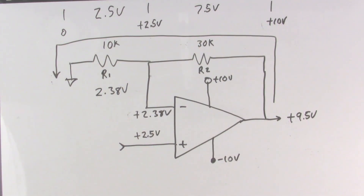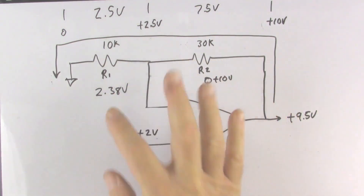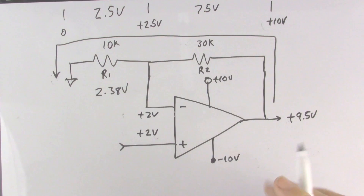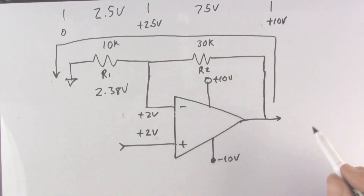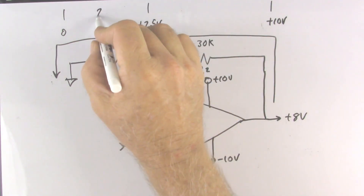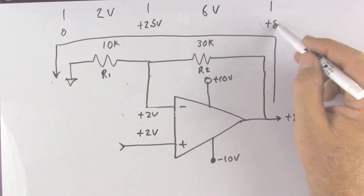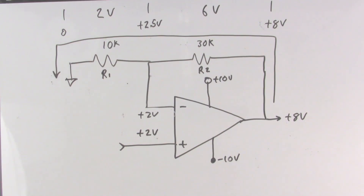What can we do about that? There are three things we can do. One: we could limit the input — if we limit this to 2 volts, with a 3-to-1 ratio and a gain of 4, we expect the output to be plus 8 volts. Looking at our numbers: 2 volts at the input, 6 volts across the larger resistor, for a total of 8 volts. Now the circuit is within its parameters, it's not saturated, and we see a gain of 4. The amplifier is doing what it should.